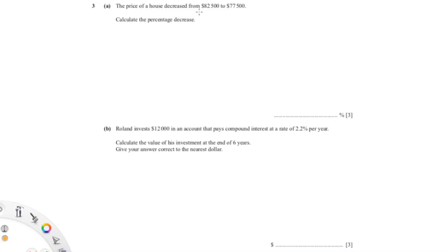Okay, so from this question you know that this is the original value, and so to find a percentage decrease it will be 82,500 minus 77,500 over the original, which was 82,500, times 100 because you're trying to find a percentage.